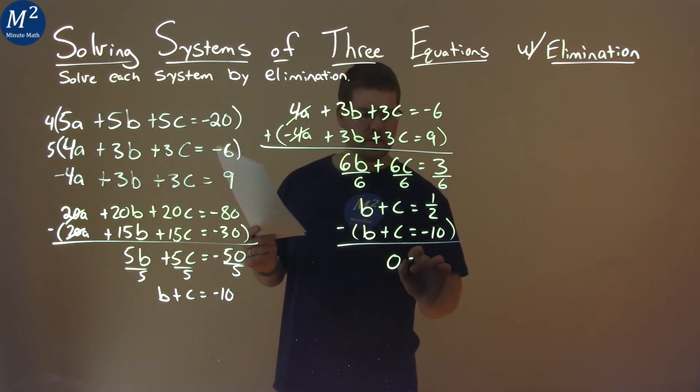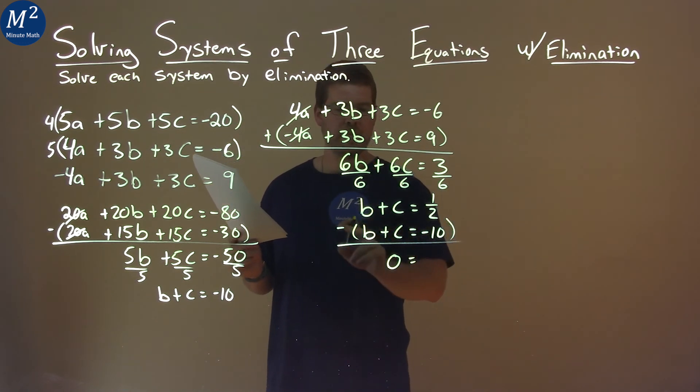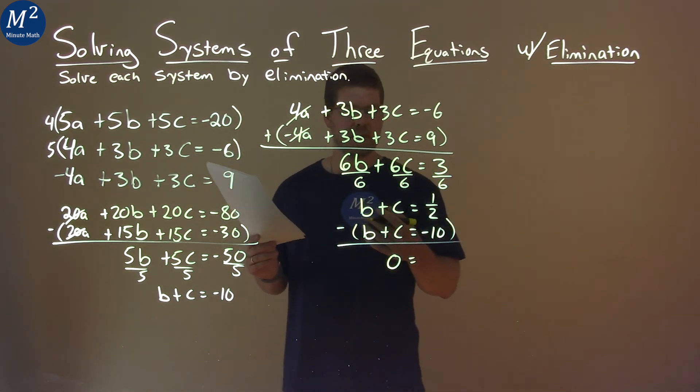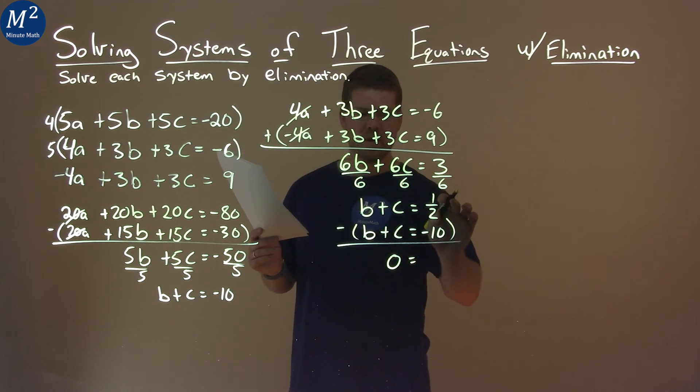On the right-hand side, 1 half minus negative 10. So we're adding positive 10. It's going to be, well, so 1 half minus a negative adding a positive. That's 10 and 1 half.